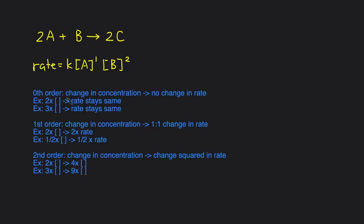Orders indicate how the concentration change affects the rate change — how the rate will change in response to a concentration change. Think of it as the exponent you're raising the number to. If something is zero order, it's raised to the zero power, and that means a change in concentration leads to no change in rate, because anything raised to the zero power is just 1. For example, if you're doubling the concentration, 2 to the zero power equals 1, so the rate stays the same. Likewise if you triple the concentration but it's zero order, the rate stays the same.